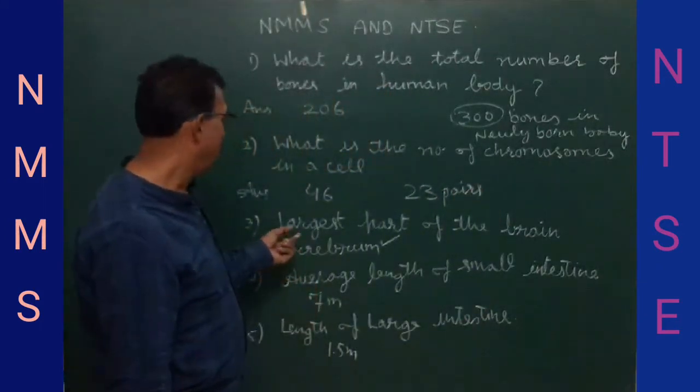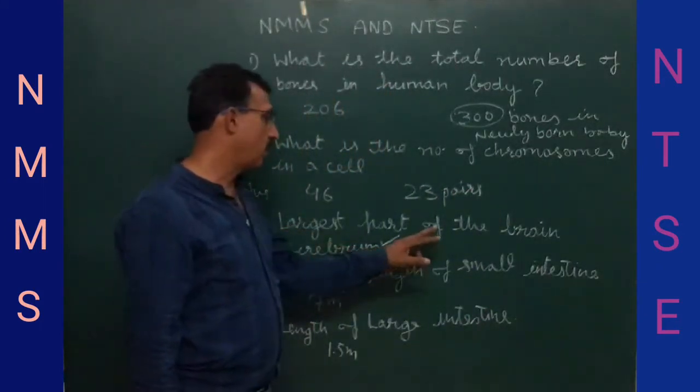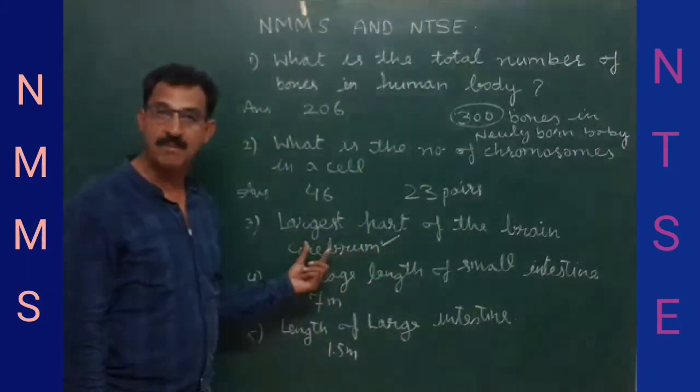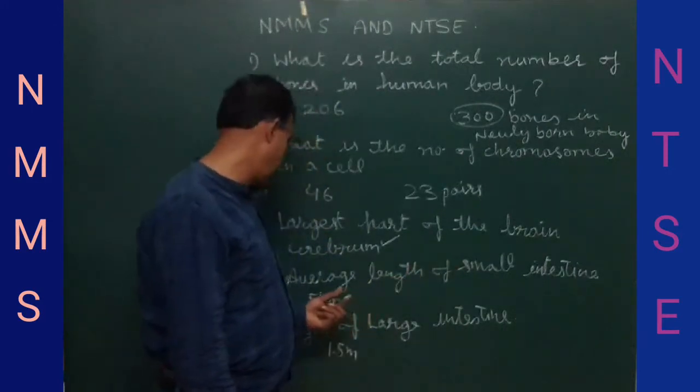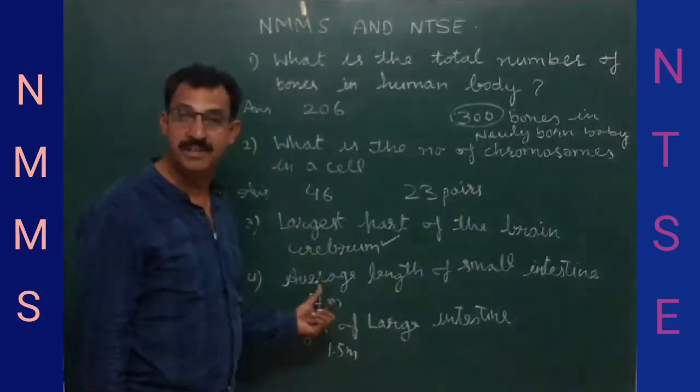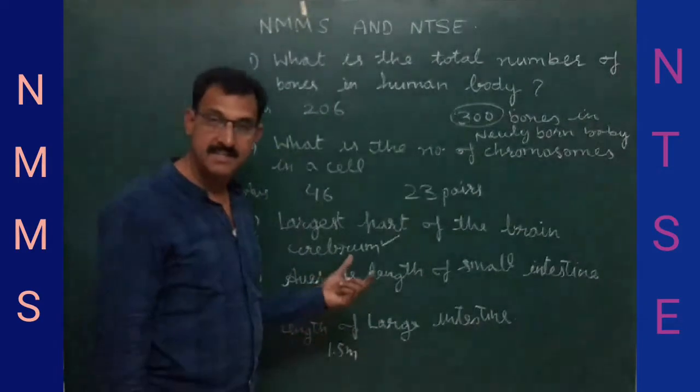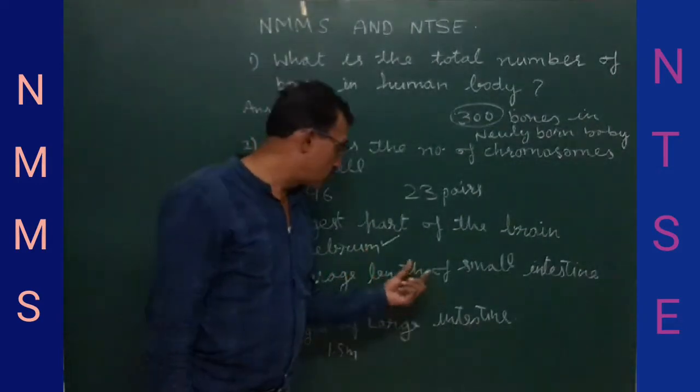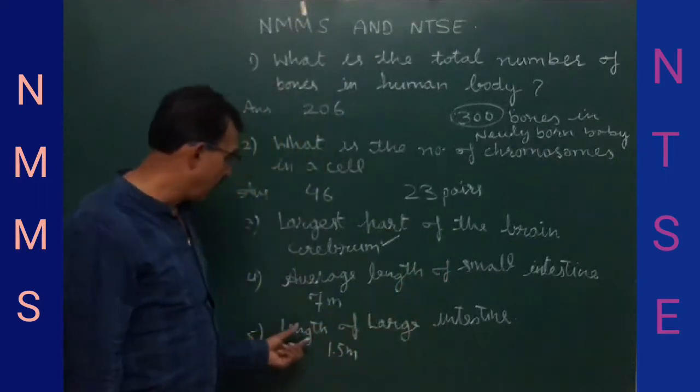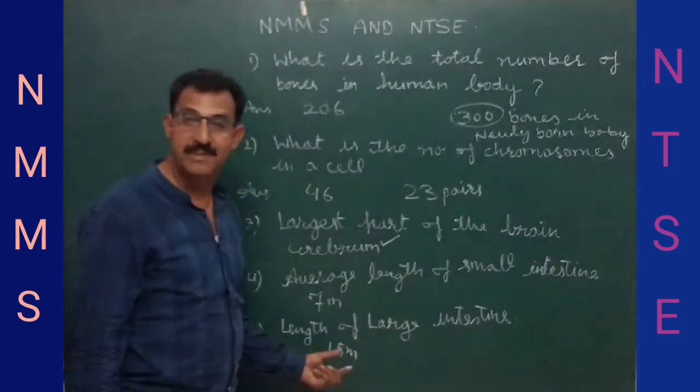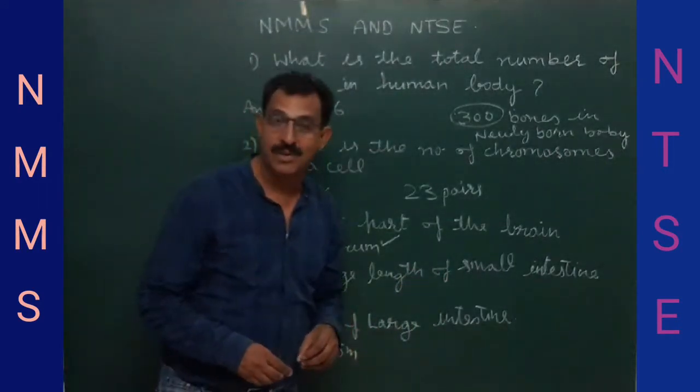Largest part of the brain is cerebral. Average length of the small intestine is 7 meters. Large intestine is 1.5 meters.